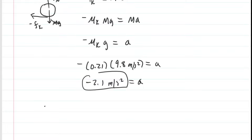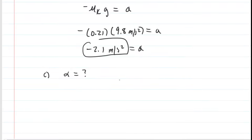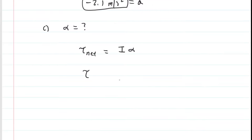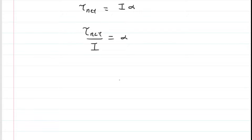Part C wants the angular acceleration, alpha. We apply Newton's second law in a rotational sense: instead of F-net equals Ma, we use net torque equals moment of inertia multiplied by angular acceleration. Dividing both sides by the moment of inertia gives the expression for angular acceleration. From a table in an earlier chapter, the moment of inertia of a solid ball rotating about its center of mass is equal to two-fifths times its mass times its radius squared.